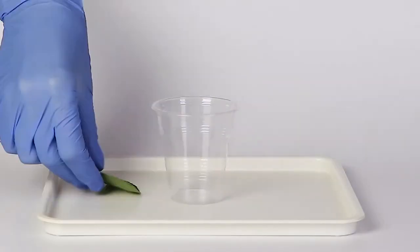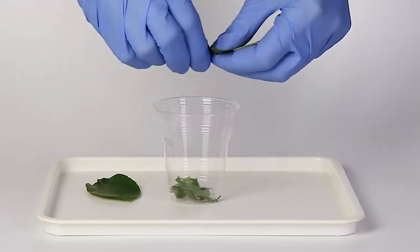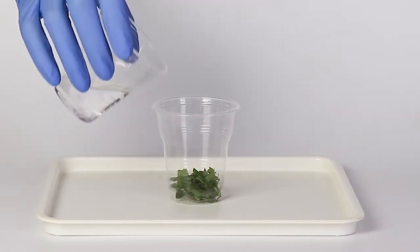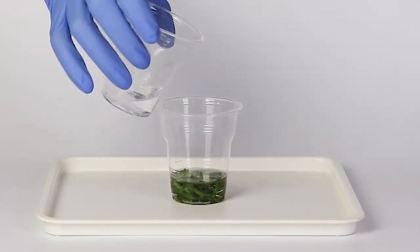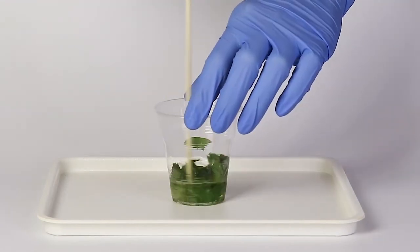Tear up some green leaves and put them in your disposable cup. Pour some alcohol over the leaf fragments, enough to cover them completely. Stir the mixture with the wooden stick.